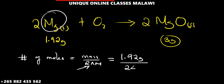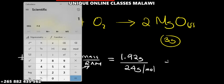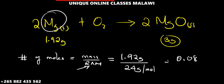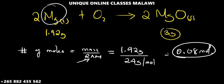The RAM of magnesium from the question is 24 grams per mole. So we have 1.92 divided by 24. The answer is 0.08 moles.